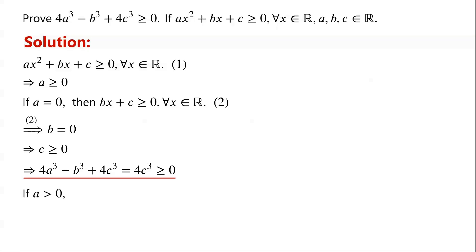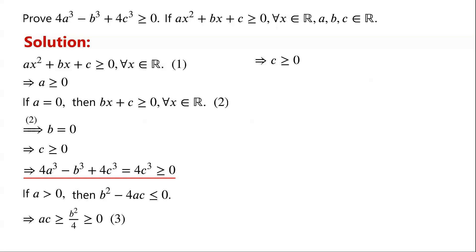If a is greater than zero, then b squared minus 4ac must be less than or equal to zero. Because otherwise the quadratic equation ax squared plus bx plus c equals zero has two distinct roots, meaning there exist some values of x for which the quadratic expression is negative — contradicting that ax squared plus bx plus c is greater than or equal to zero for all real x. From b squared minus 4ac is less than or equal to zero, we have ac is greater than or equal to b squared over four, which is greater than or equal to zero. Because a is greater than zero and ac is greater than or equal to zero, c must be greater than or equal to zero.